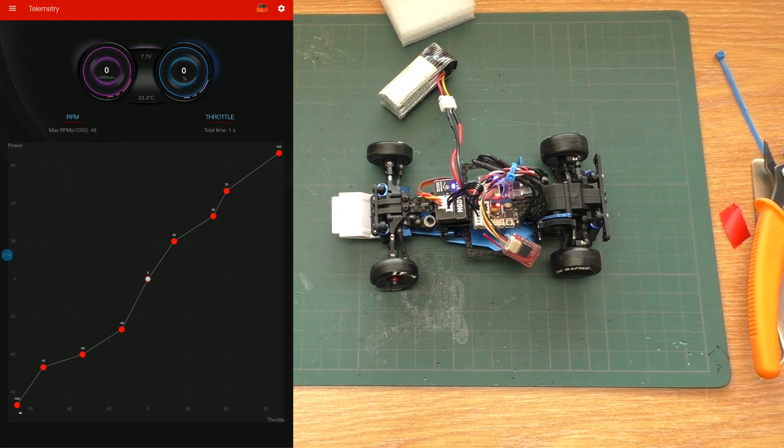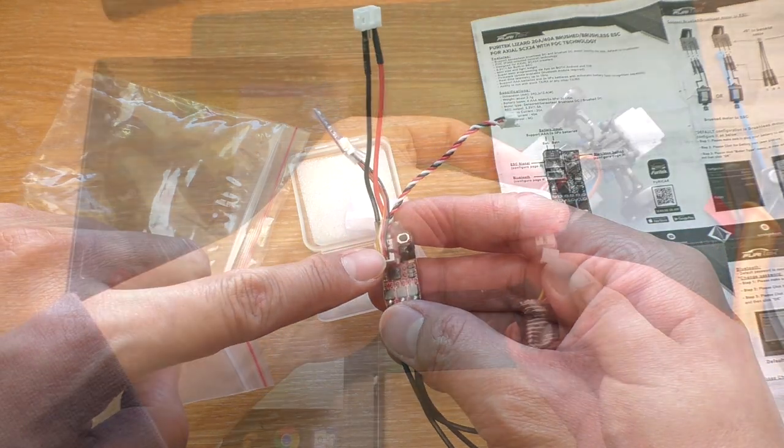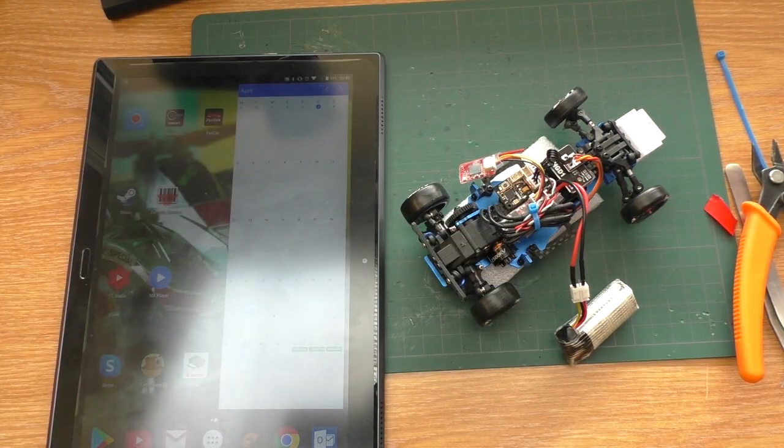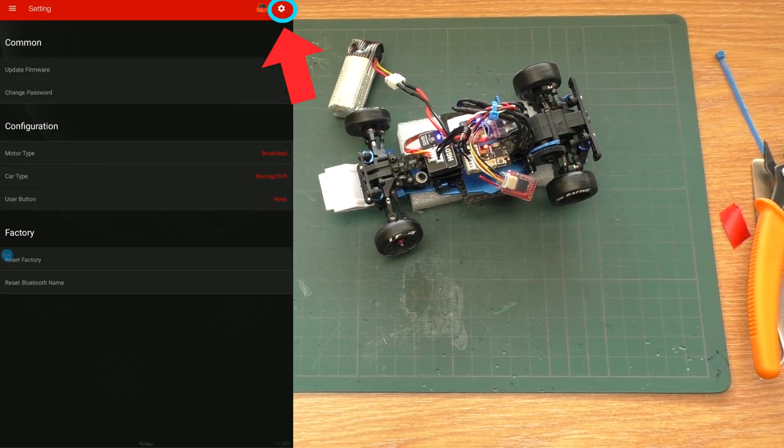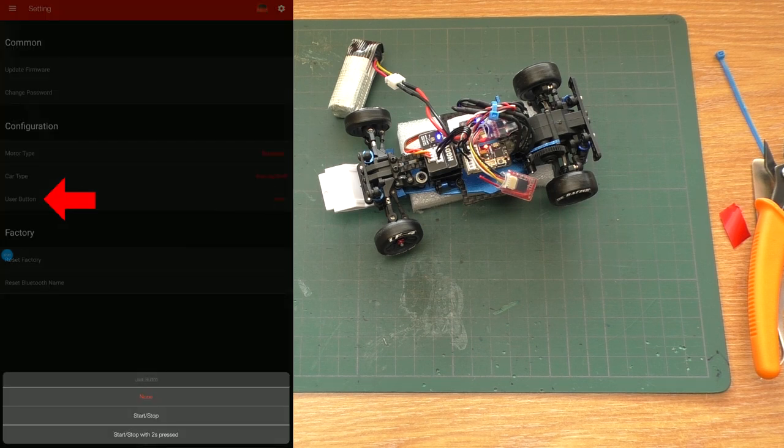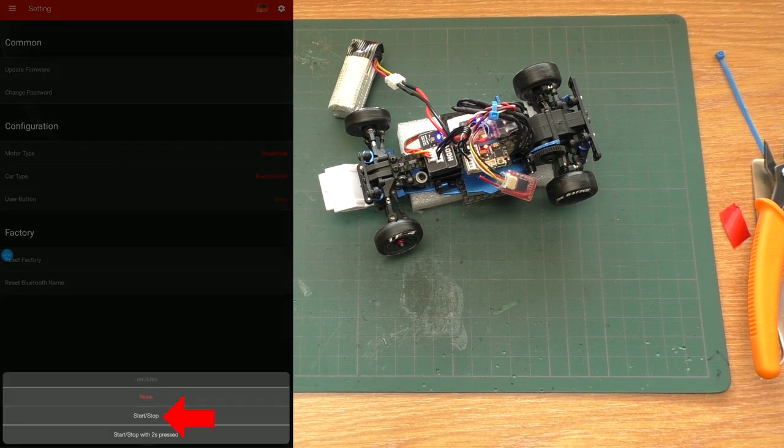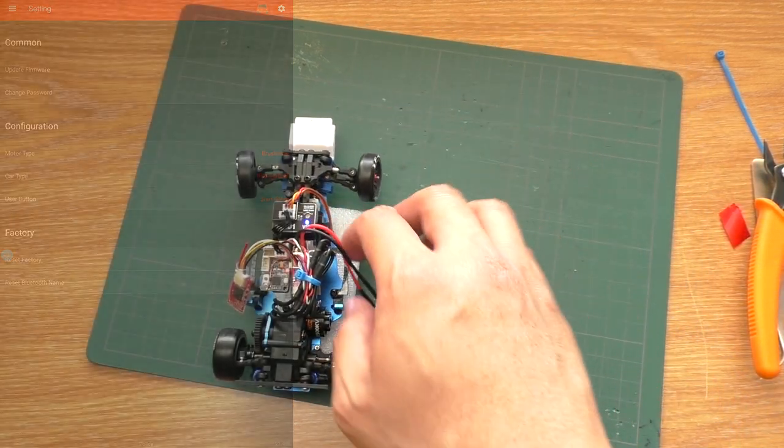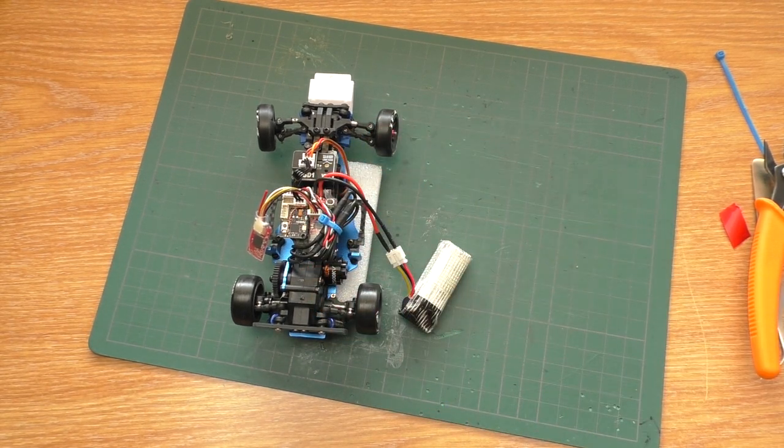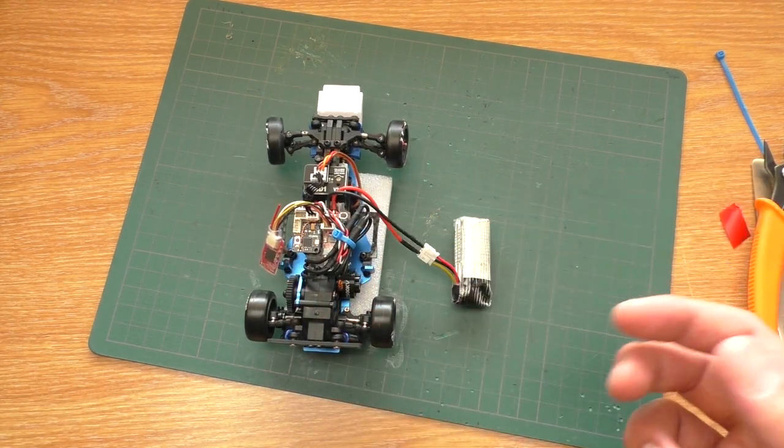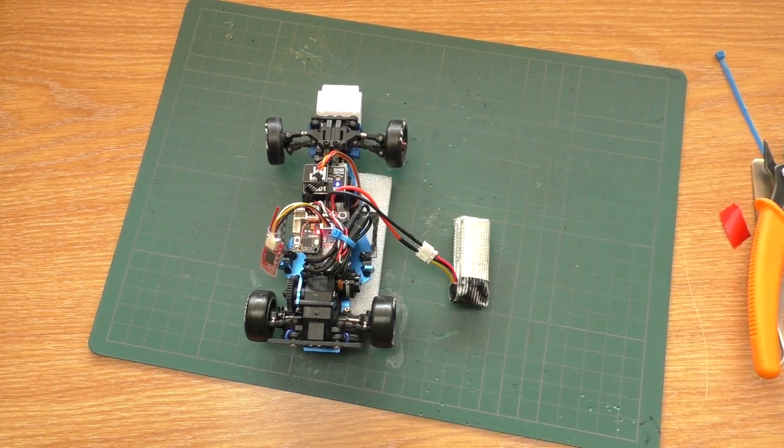And the last thing you might need to change is the user button. Right now, in this default state, it is doing nothing, which means once you plug the battery in, it is going to turn on. Actually, this is not a very good way to use this ESC. So we can go into the setting, user button, and then change from none to start/stop. With this, when I press the button, the car will turn off. Just like that. And then when I want to turn the car on, I can click this switch. And it is on.